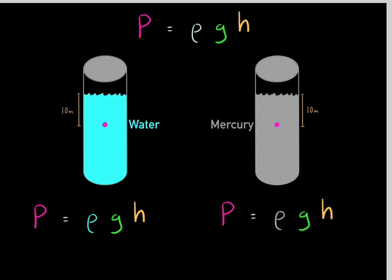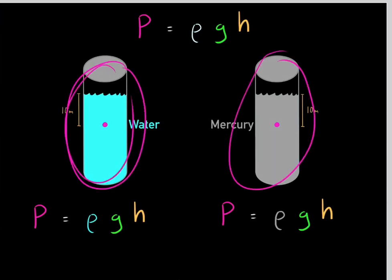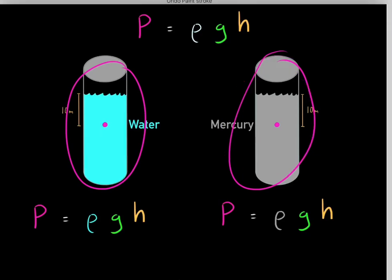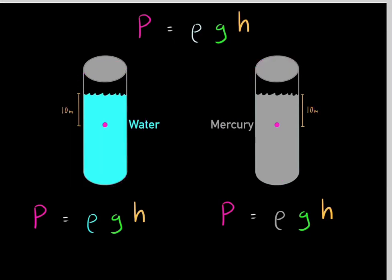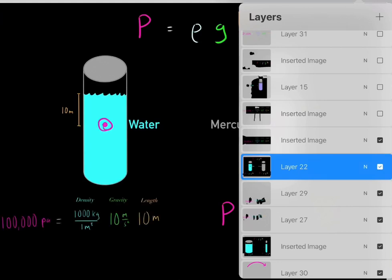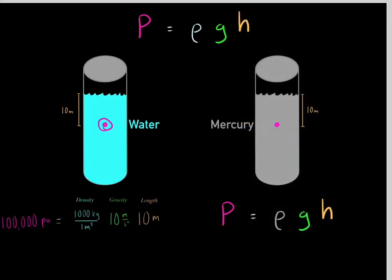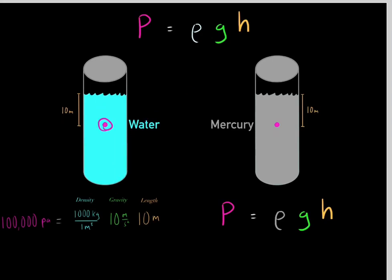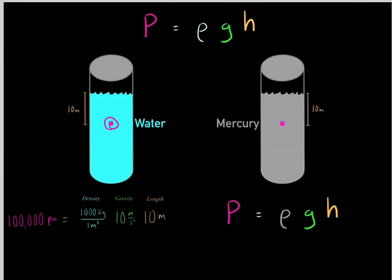Let's try another example. Say we have two containers: one of water and one of mercury, and we're trying to determine the pressure 10 meters from the surface in both. We use the same equation — density multiplied by g, the acceleration due to gravity, multiplied by the distance from the point to the surface. Plugging in all those values for water gives a pressure of 100,000 pascals at that point.